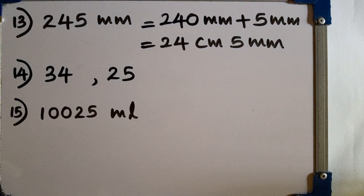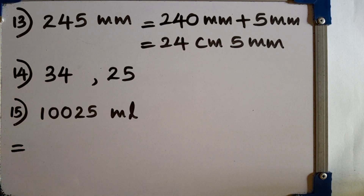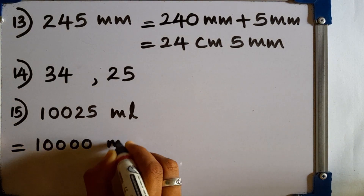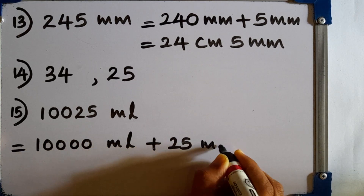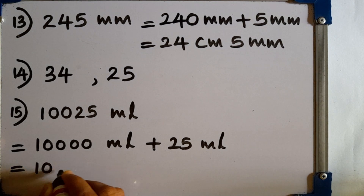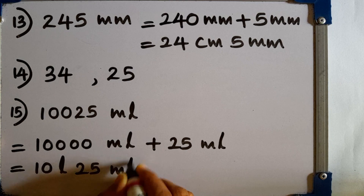Question number 15: express 10,025 milliliters of liquid in liters and milliliters. We know that 1 liter equals 1,000 milliliters. We can separate it as 10,000 milliliters plus 25 milliliters. 10,000 milliliters can be written as 10 liters. So the answer is 10 liters and 25 milliliters.